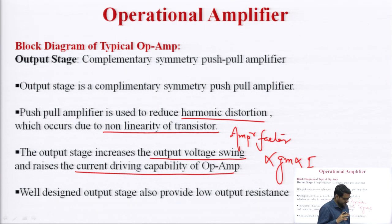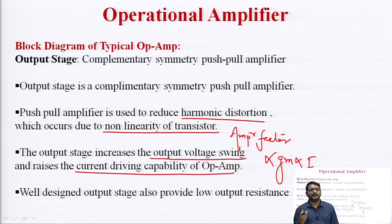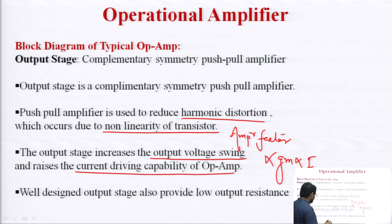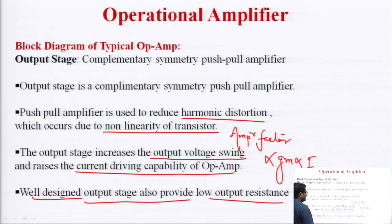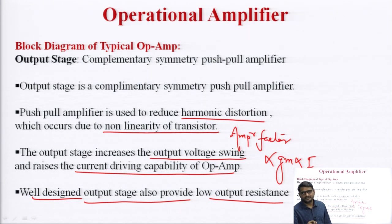The output stage also increases the output voltage swing and the current driving capability — related to the transconductance gm, which depends on the device current. Importantly, the power amplifier provides low output impedance for the operational amplifier. A well-designed output stage provides low output resistance, which helps neglect the loading effect at the output.